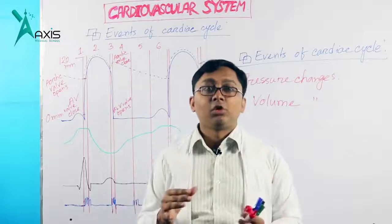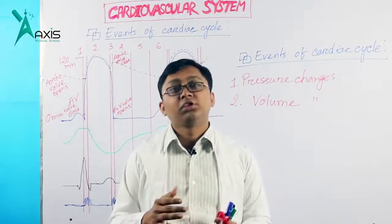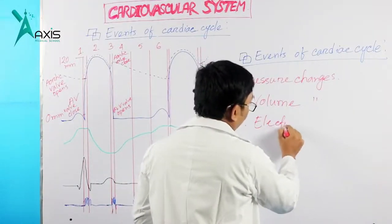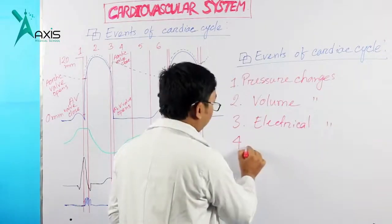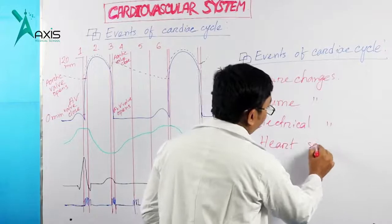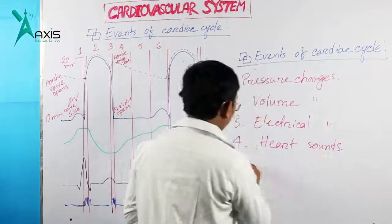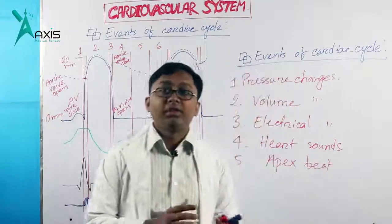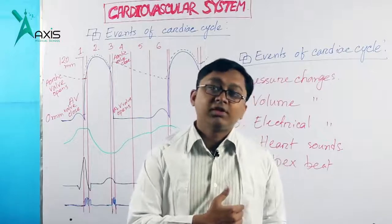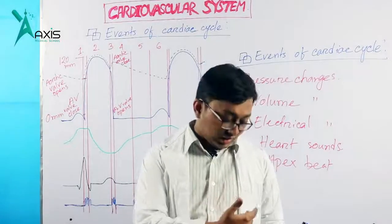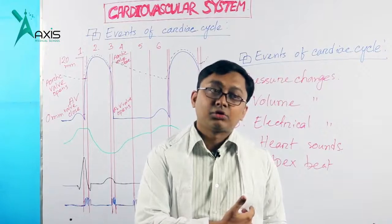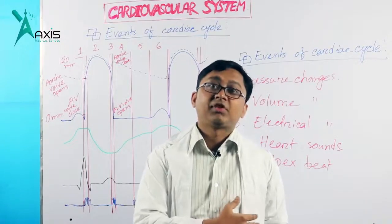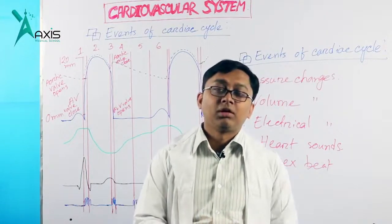Sometimes we also get S3, the third heart sound, and the fourth heart sound. So the third event is electrical changes, and the fourth is heart sounds. Then there is the apex beat, which is also a cardiac event. It is best felt in the left fifth intercostal space close to the midclavicular line.